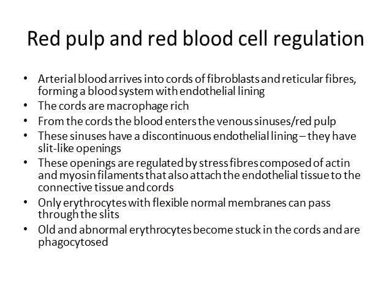Only red blood cells with flexible membranes can pass through these slit-like openings in the venous sinuses. Old erythrocytes no longer have flexible membranes — they get stuck in the connective tissue. Abnormal erythrocytes have abnormal membranes that prevent them from flexing through into the venous sinuses, so they also become stuck in the cords. Since the cords are macrophage-rich, macrophages come and gobble up these erythrocytes through phagocytosis.